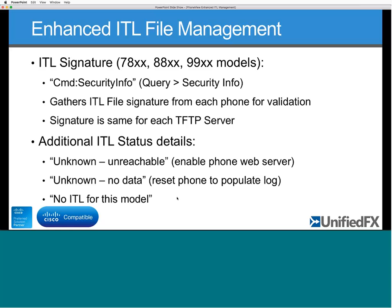There are two reasons we might not get an ITL status. One is straightforward: the phone's web server is unreachable - usually because it's disabled, though firewalls or timeouts can also cause this. We now flag that as 'unreachable.' The great benefit of this is that even if you get say 80% of your phones with a known ITL status value, the remaining unreachable ones can be selected as a subset, re-queried, and you can iterate through to ensure you get all your ITL data.